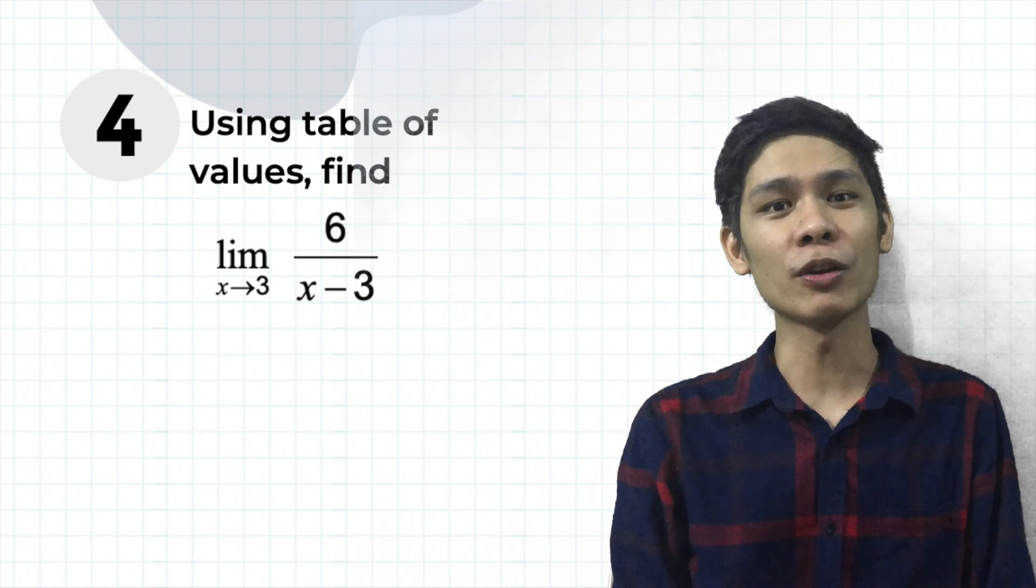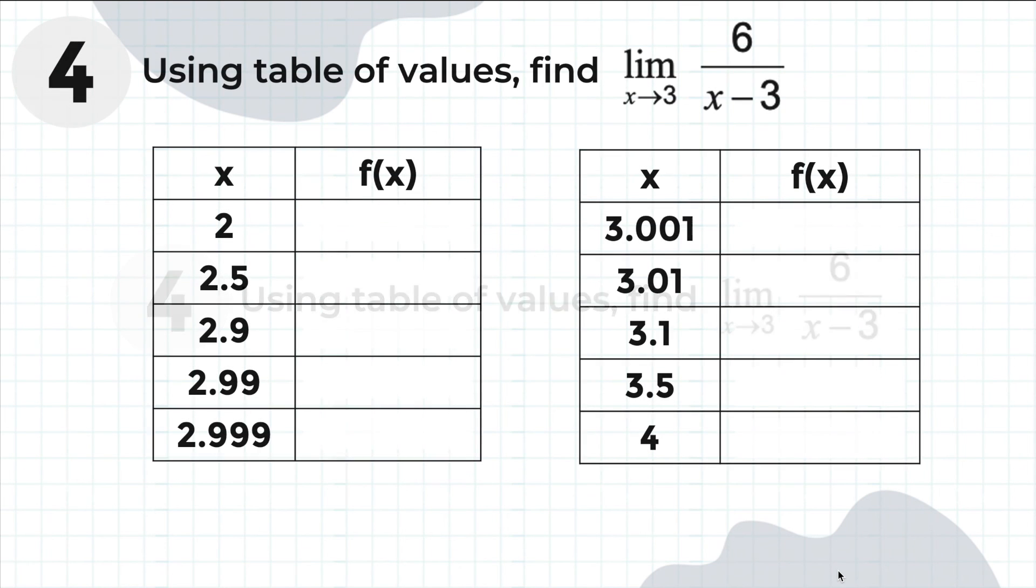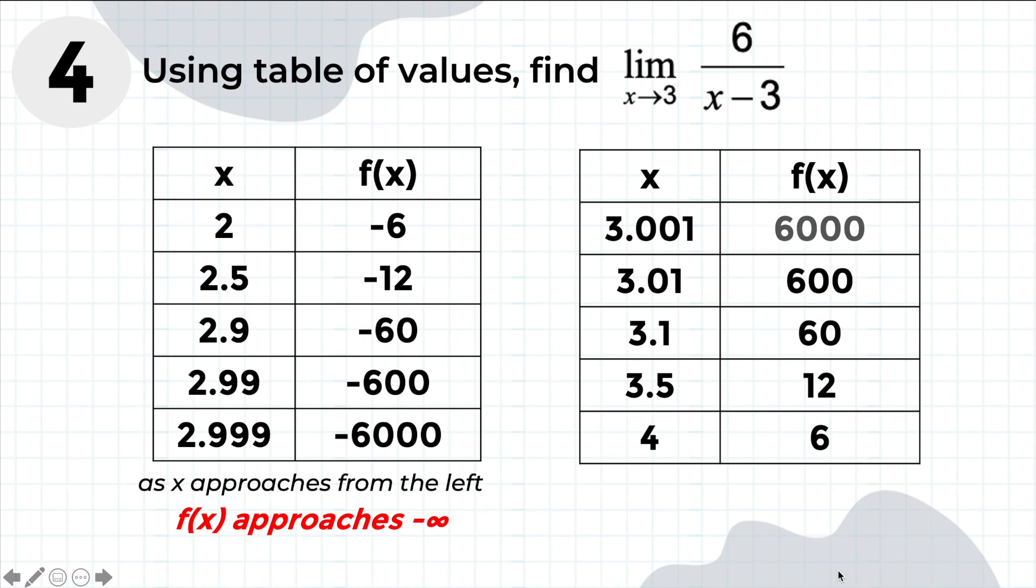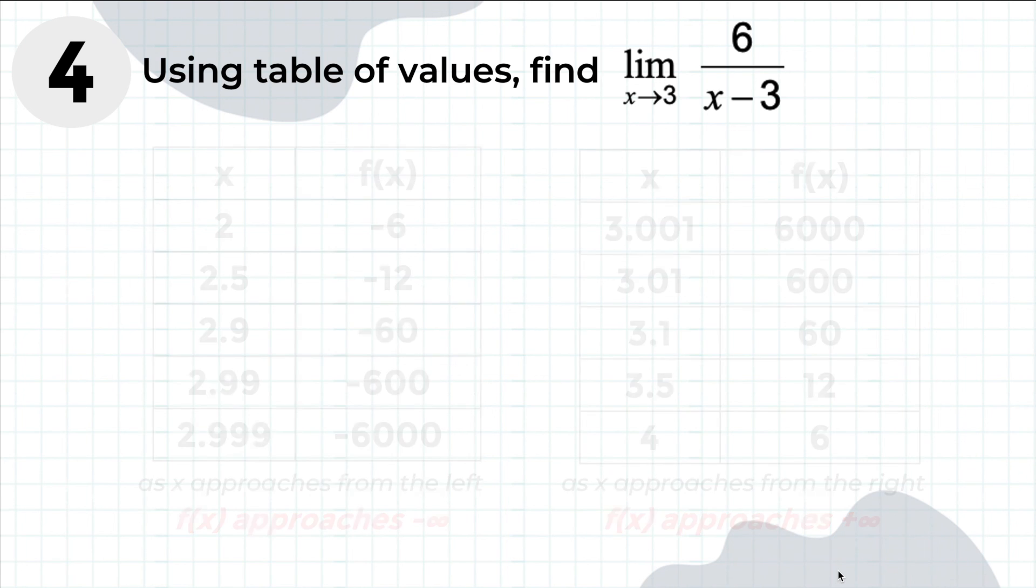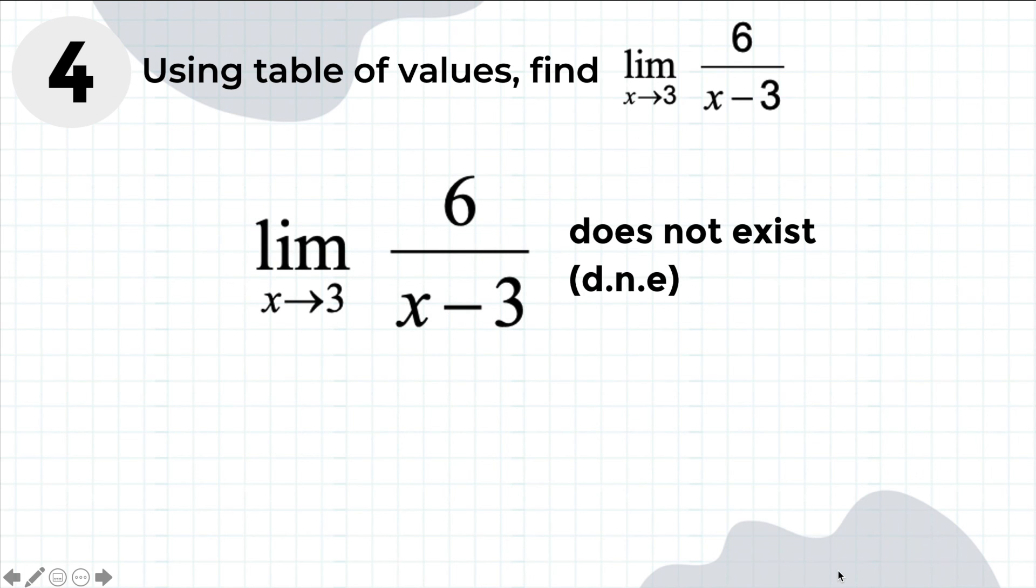Let me explain this further by using the table of values in example number 4. And this endlessness is evident in the numbers in the table. For the table on the left, as X approaches 3 from the left, the output values are increasing without bound negatively. So we may say it is approaching negative infinity. Then, for the table on the right, as X approaches 3 from the right, the output values are increasing without bound positively. So again, we say that it is not approaching a real number. Instead, we say that it is approaching positive infinity. Overall, since the output values or f(x) do not approach a real number, we simply conclude that the limit does not exist.